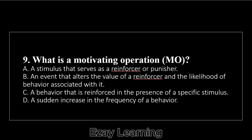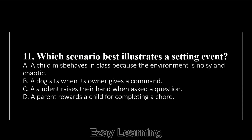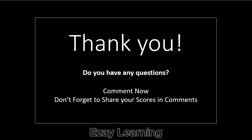What is a motivating operation (MO)? Answer: an event that alters the value of a reinforcer and the likelihood of behavior associated with it. Which of the following is an example of an establishing operation (EO)? Answer: a child becoming more willing to eat a snack after not eating for hours. Which scenario best illustrates a setting event? Answer: a child misbehaves in class because the environment is noisy and chaotic. What happens during satiation? Answer: the reinforcing value of a stimulus decreases due to over-exposure or consumption. That was all for today — hope it was easy to understand. Thank you for watching.